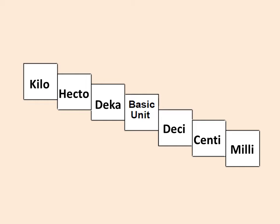Whenever we're performing conversion, students, we have to be able to identify our bigger units from our smaller units. As you descend the stairs, the units become smaller — bigger units are at the top and smaller ones are at the bottom. So which one is bigger: centi or deca? Deca. Which one is bigger: milli or deci? Deci.